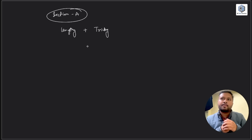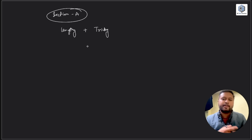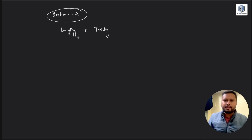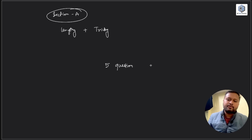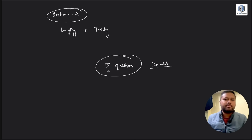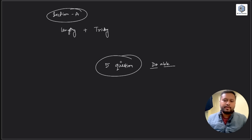Every year the CSIR NET aptitude part used to be relatively easier compared to the GATE aptitude part, but this time CSIR NET aptitude was literally tricky. If somebody spent 30 minutes on Section A, around five questions could have been done — those were the doable ones. I'm not talking about accuracy, just about approachability.